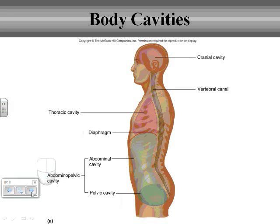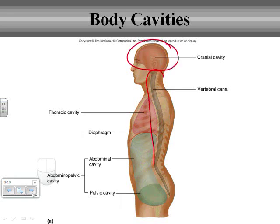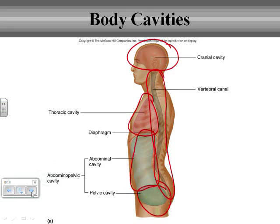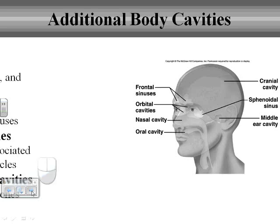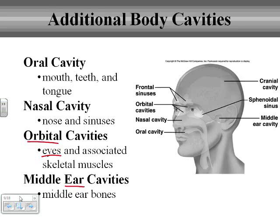This is just another picture diagramming the different body cavities: cranial, vertebral, thoracic, abdominal, and pelvic. In addition, we have some other smaller body cavities. When we talk about the head, we have specific cavities — oral, nasal, orbital (often associated with eyes), and a cavity for the ears.